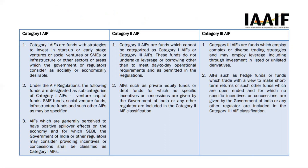Category one AIF funds have strategies to invest in startups, early-stage ventures, social ventures, or SMEs. Importantly, AIFs which are generally perceived to have a positive spillover effect on the economy, and for which the Government of India or regulators may consider providing incentives or concessions, shall be classified as category one AIF. So category one funds — venture capital funds, SME funds, social venture funds, and infrastructure funds — receive some incentive or concession from the government.